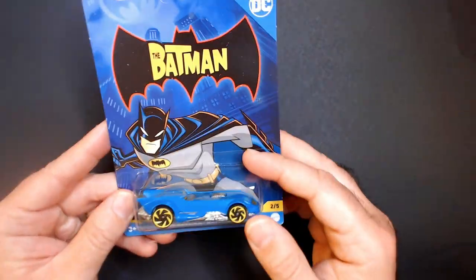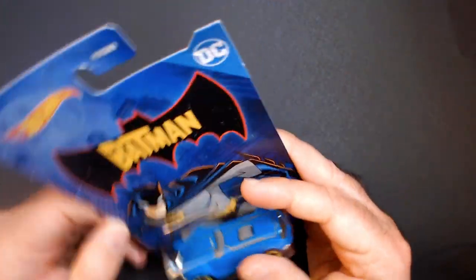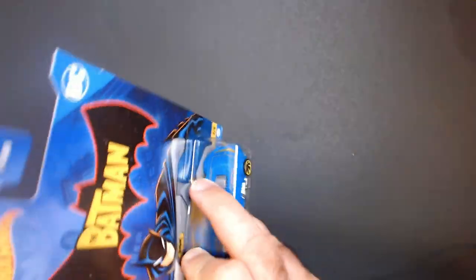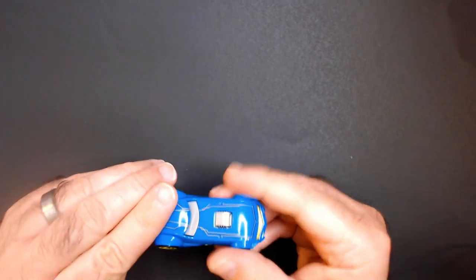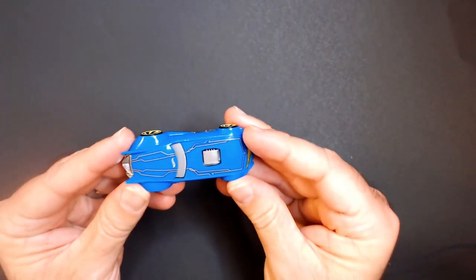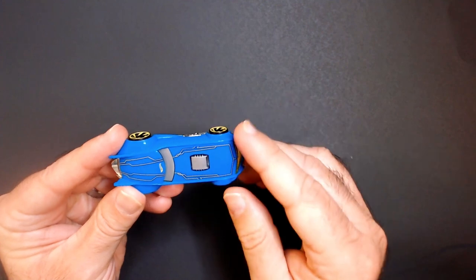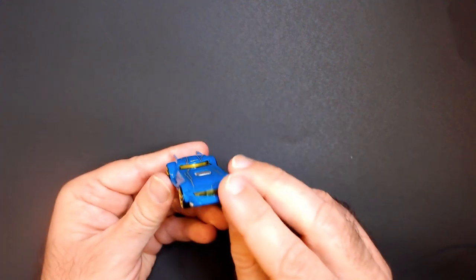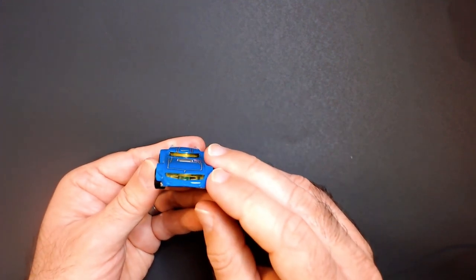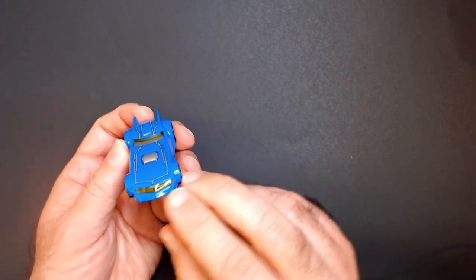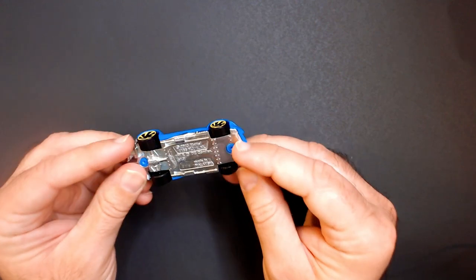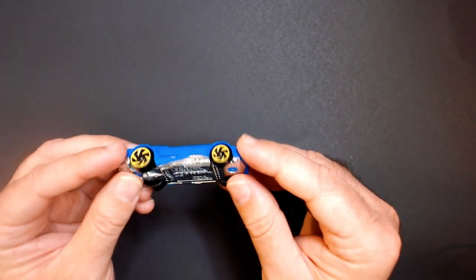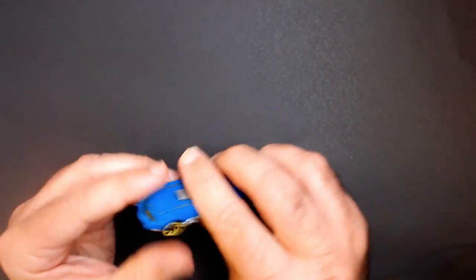Cool card, the Batman up here. Detail on the hood, trunk there, got yellow on the windows like the headlights. It looks pretty cool, blue and yellow go good together. On the back or bottom, let's look at the Batmobile. I like it, it's pretty cool.